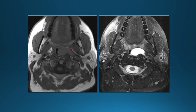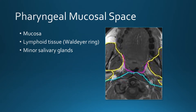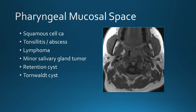The next patient has a mass that is medial to the parapharyngeal fat, placing it in the pharyngeal mucosal space. The pharyngeal mucosal space contains mucosa, lymphoid tissue of Waldeyer's ring, and minor salivary gland tissue. Pathology includes squamous cell cancer, infection such as tonsillitis or abscess, lymphoma, minor salivary gland tumors, retention cysts, and Thornwaldt cysts.